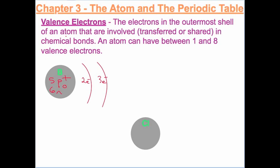Chlorine is atomic number 17. It has 17 protons and 18 neutrons in the nucleus. The electron configuration is two, eight, seven.